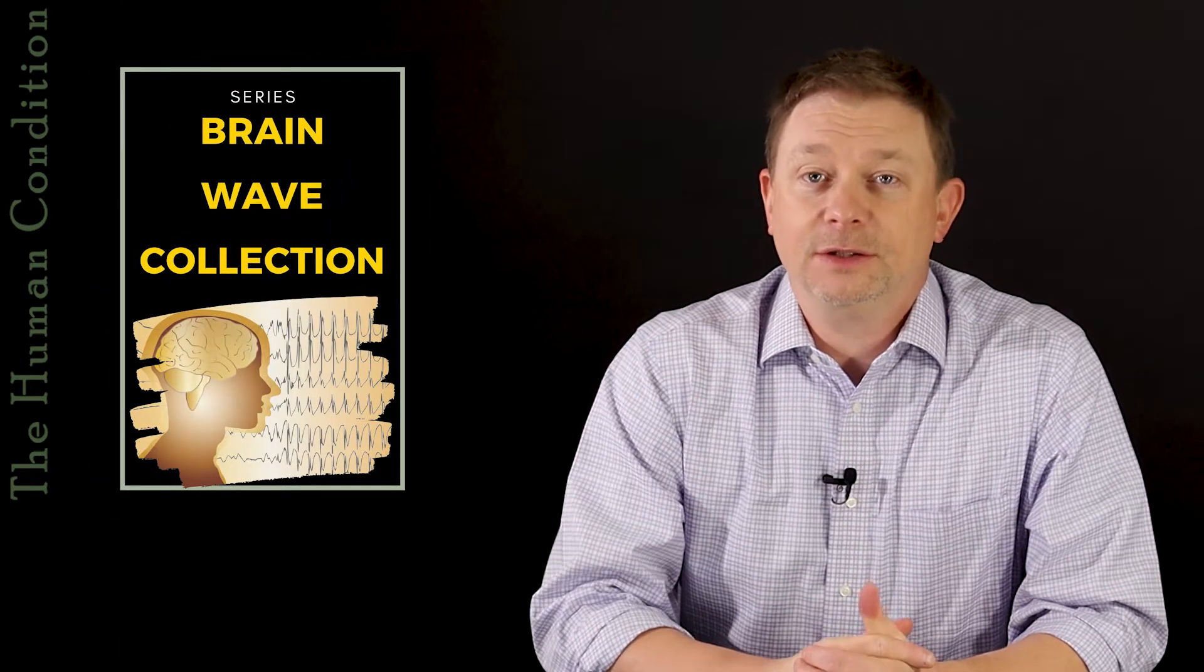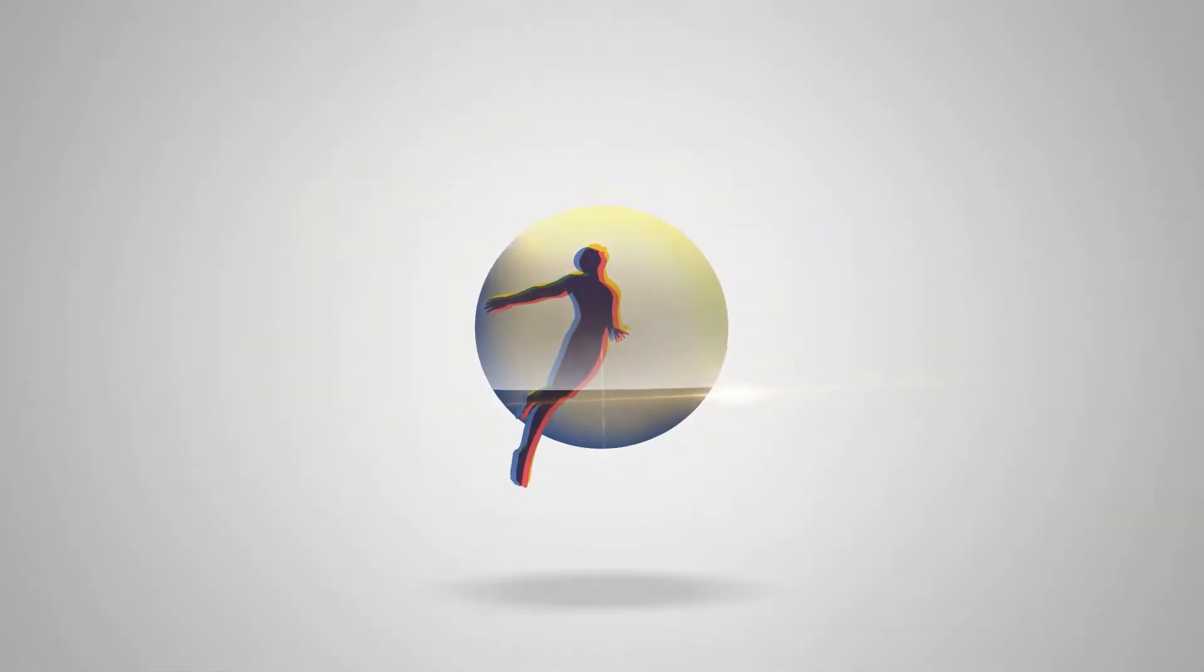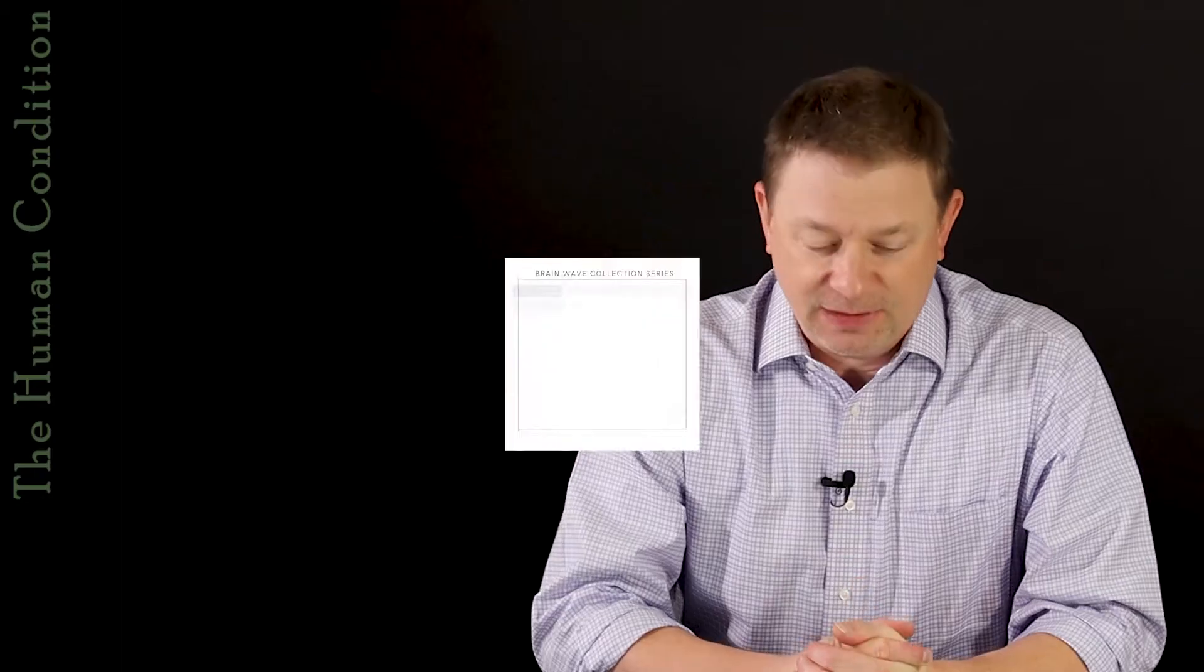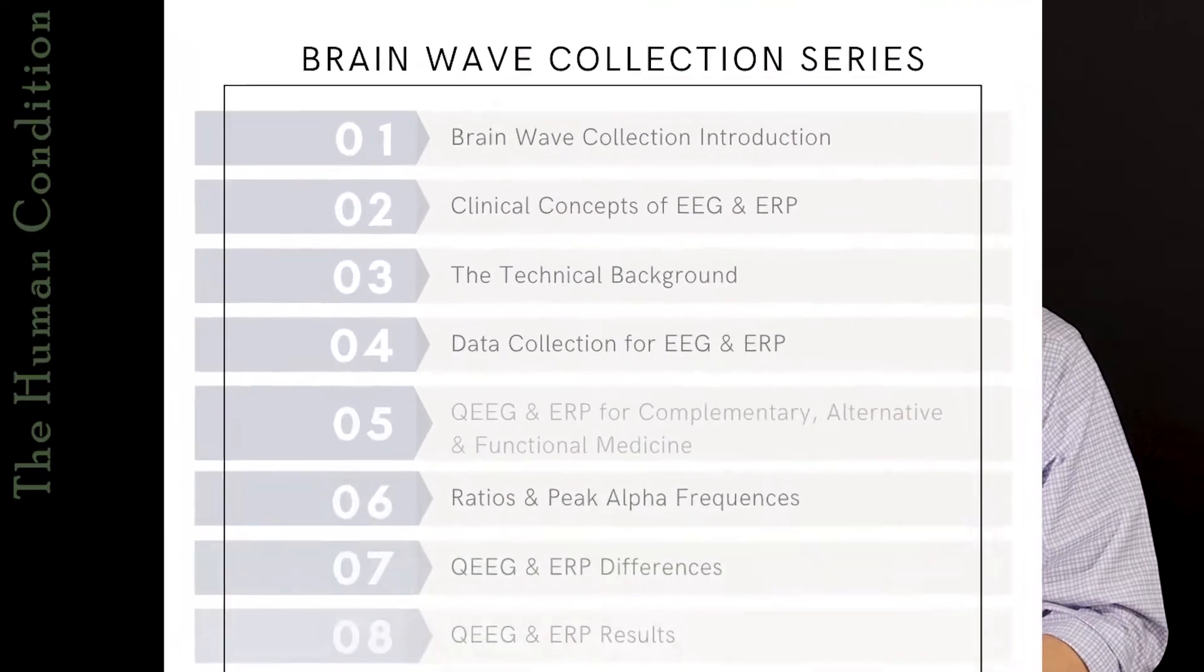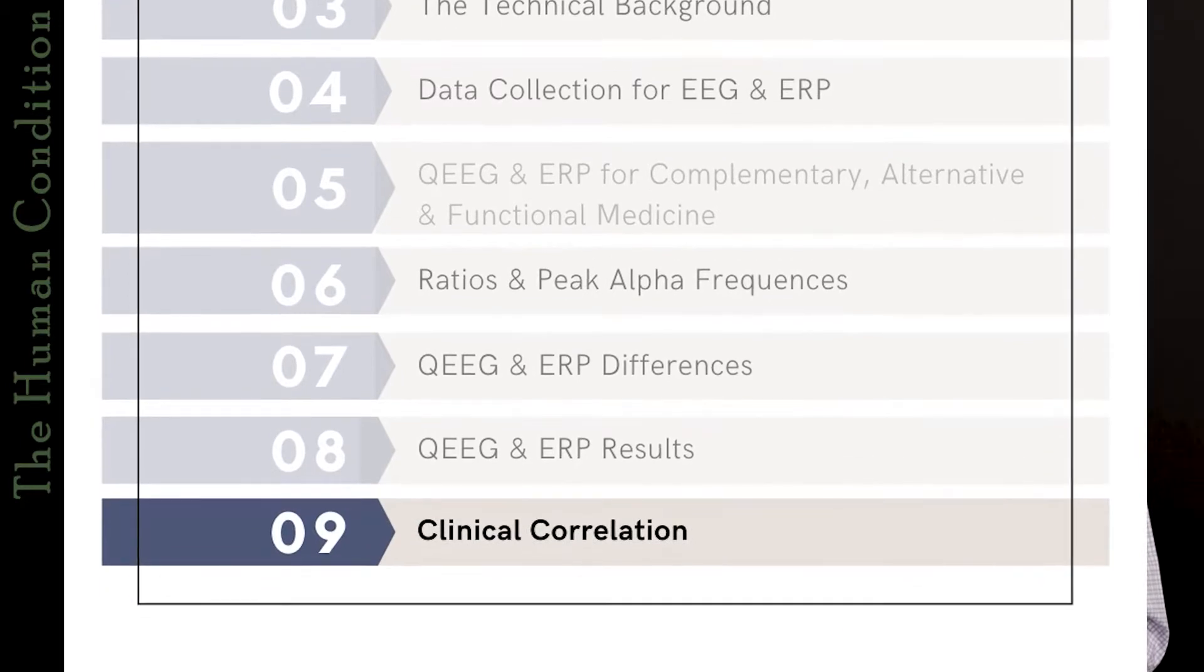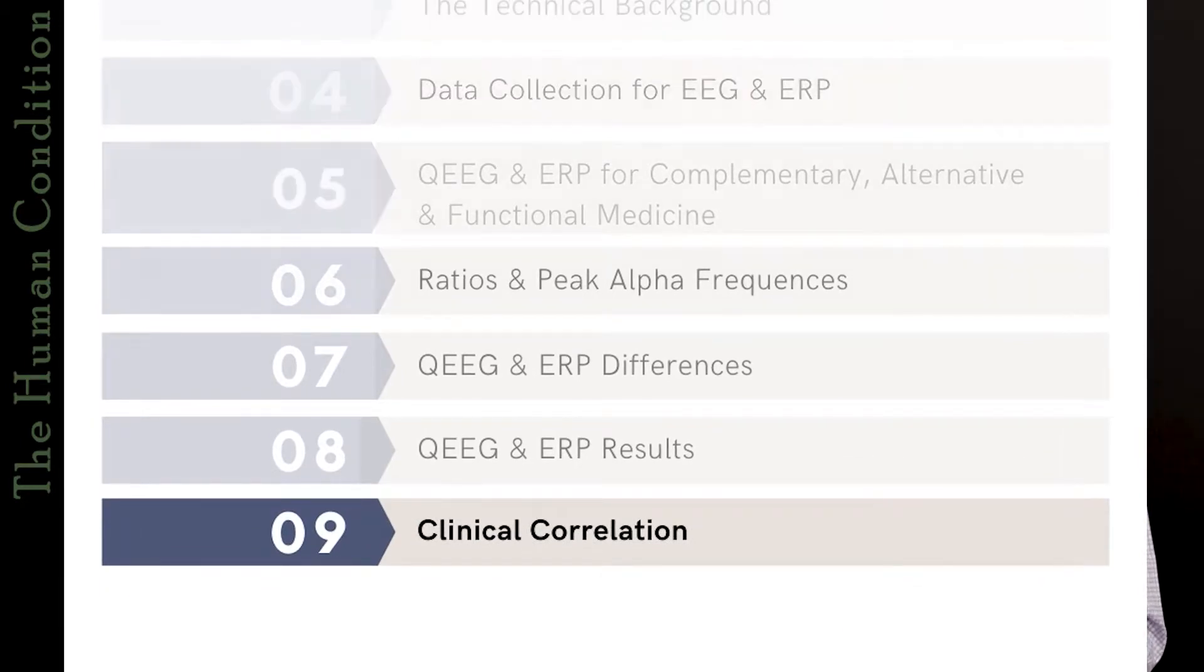Hello and welcome again. This is The Human Condition, and I'm Michael Pearce. The section we're doing today is Chapter 9, Clinical Correlation, of the course EEG and ERP for Complementary Alternative and Functional Medicine Practitioners, their patients, and their technicians.